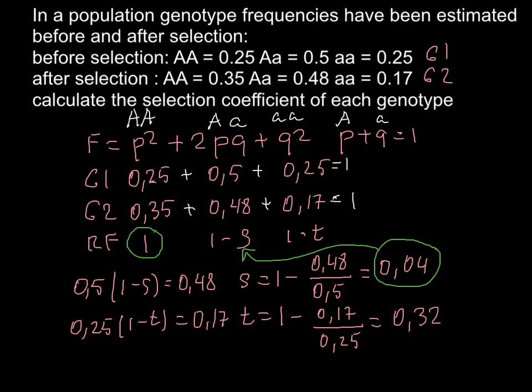We have found all three selection coefficients: for the homozygous dominant it is 1 (relative fitness = 1), for the heterozygous it is S = 0.04, and for the homozygous recessive it is T = 0.32. I hope my explanation helps you on your exam. This is all for today. Thank you for your attention. Please subscribe for my new videos that I post almost every day. Thumbs up if you like this video. Goodbye.